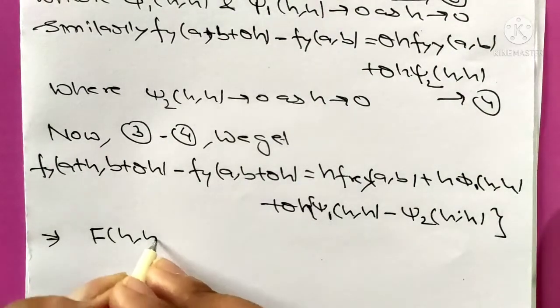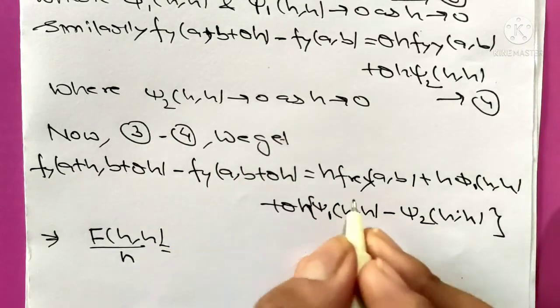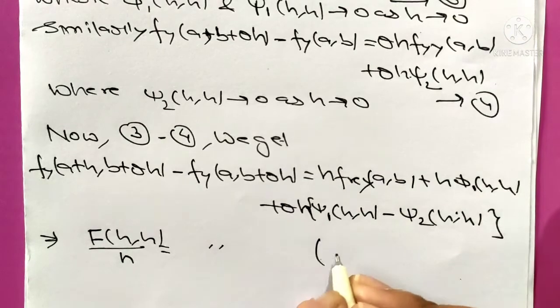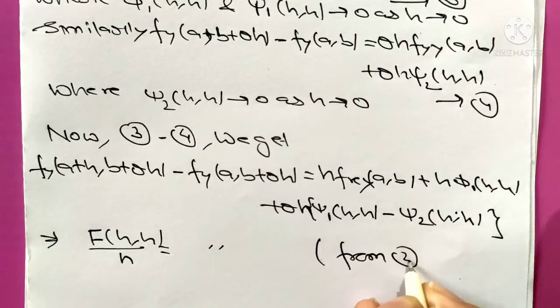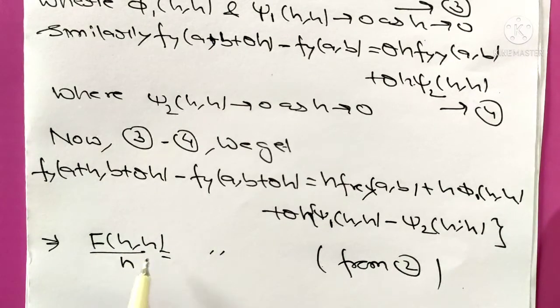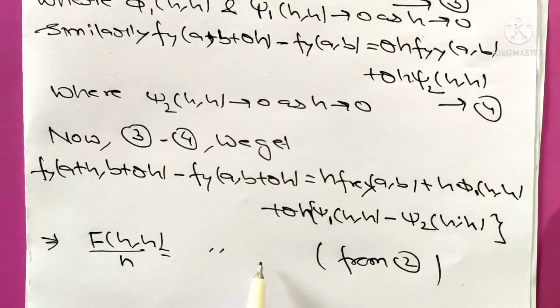Now it can be written as F(h,h) upon h equals to the same expression on right hand side from equation 2. We write this F(h,h) upon h from equation 2 and right hand side is just same.